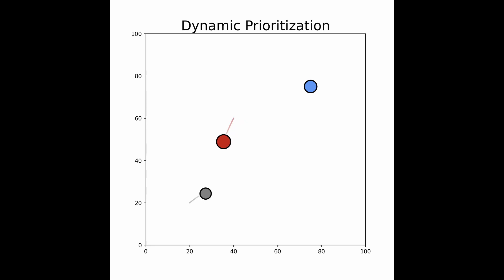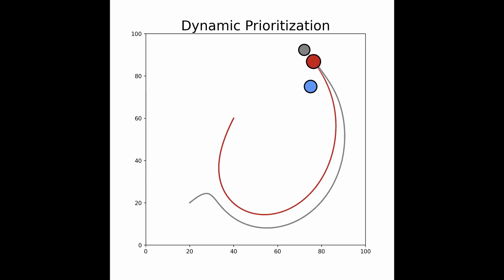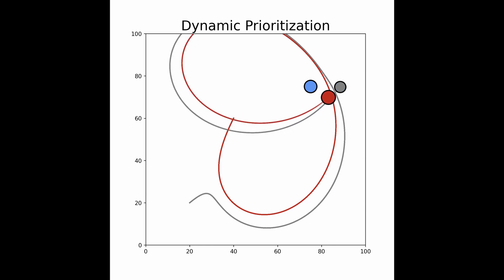So to close the video out, let's see what happens if we incorporate this dynamic prioritization idea into the simulation. It's possible I need to tweak the parameters a little bit — the mouse is getting right next to the cheese, but then the cat catches up and it darts away. But it does create a very interesting chase pattern. Hopefully this teaches the idea behind multi-objective optimization.